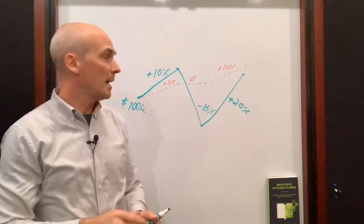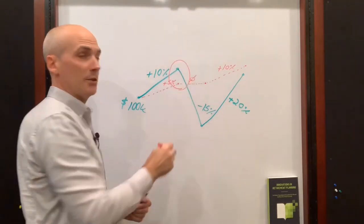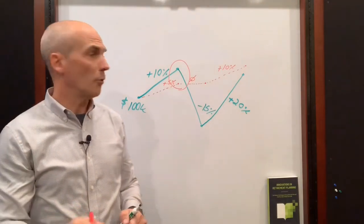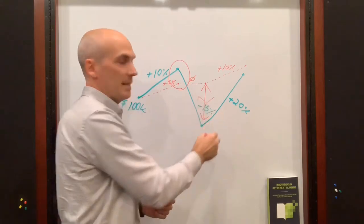So here's the trade-off. You are giving up some of the upside in the good years in exchange for protection from the downside in the bad years.